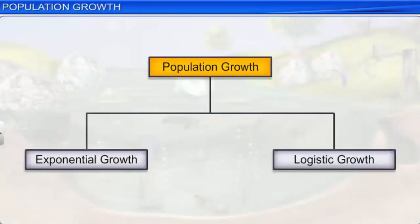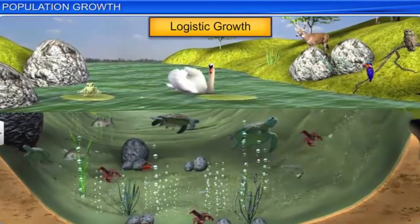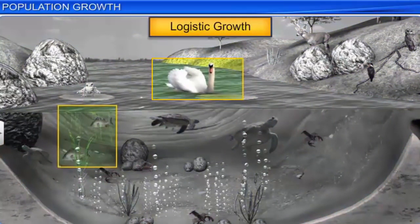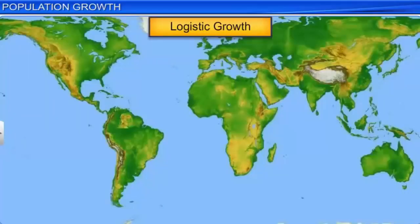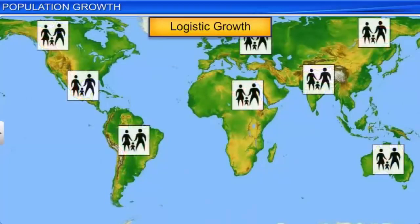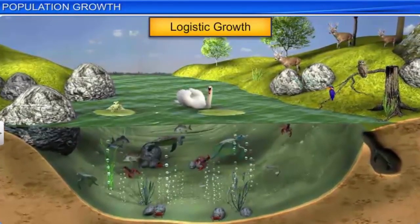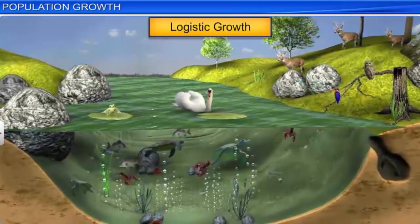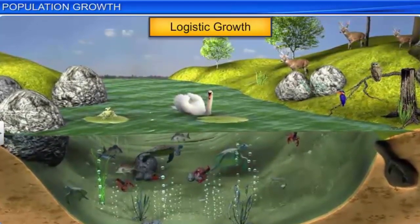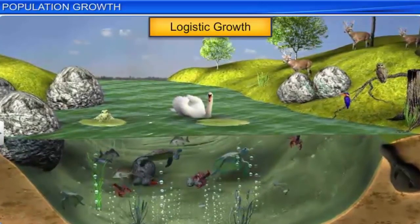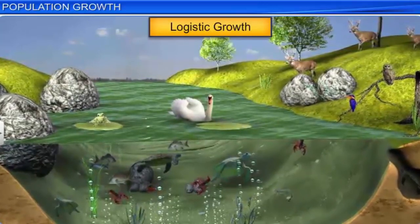Thus, an exponential growth pattern is seen when resources are unlimited. However, when resources are limited, the population growth pattern is logistic. There is always competition between individuals for limited resources, and finally the fittest individuals survive and reproduce. Keeping this fact in mind, the governments of many countries have introduced various restraints to limit human population growth. In nature, a given habitat has sufficient resources to support a maximum number of individuals, beyond which no further growth is possible. This maximum capacity or limit is called the carrying capacity of the species in that habitat, denoted by the letter K.